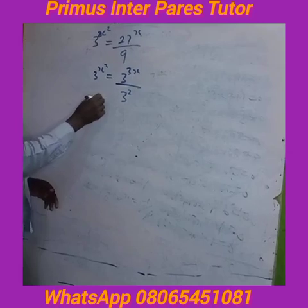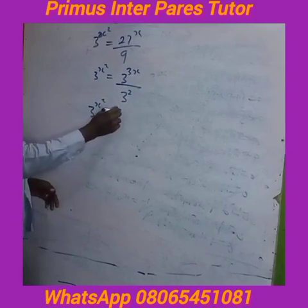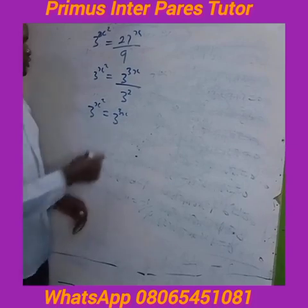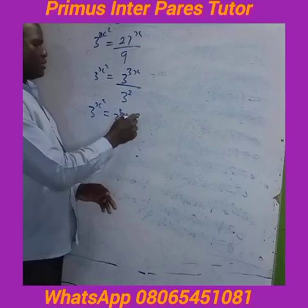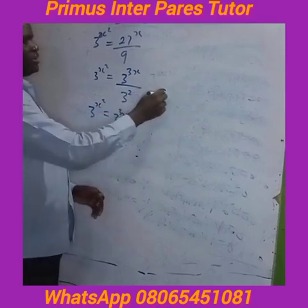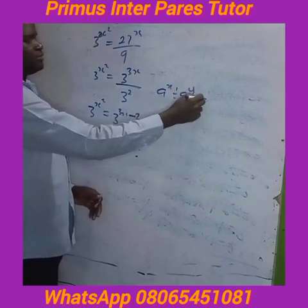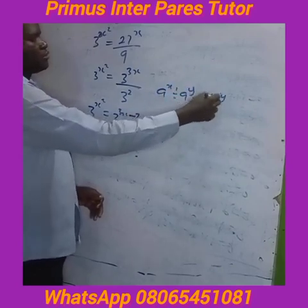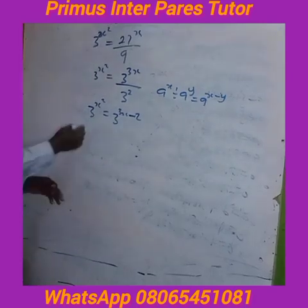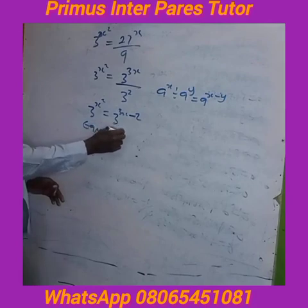From here you will have this squared equal to 3 raised to the power 3x. Making use of the law of indices — that's minus 2 division by 2. Now s is divided by l raised to the power, which gives you l squared. Then from here you will equal the powers.